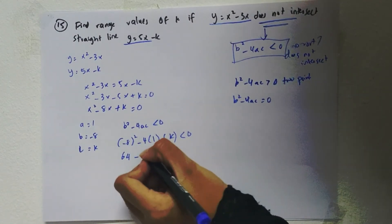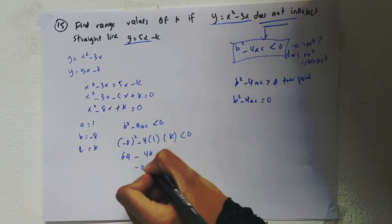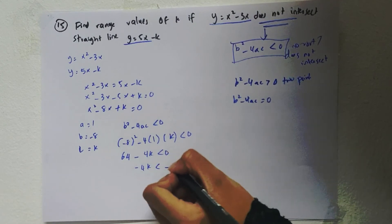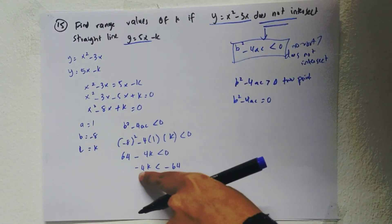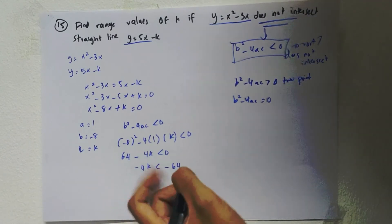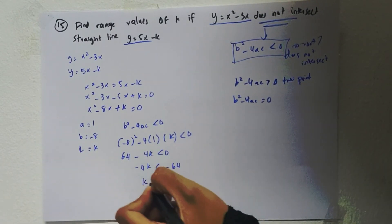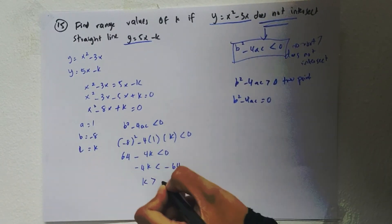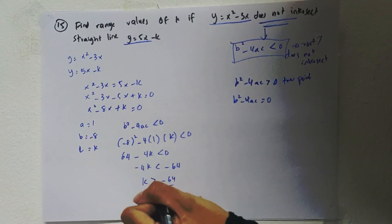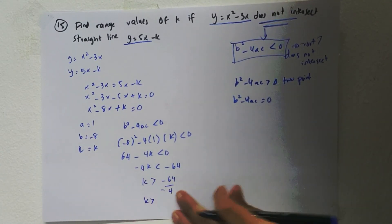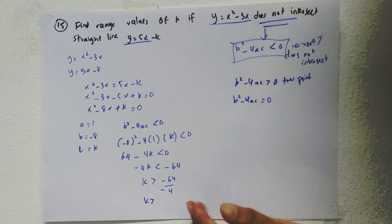So negative 4k is smaller than negative 64. Whenever you want to change the sign — dividing by a negative number — you have to change the inequality symbol to the opposite. So k is larger than negative 64 over negative 4, and k is larger than 16.